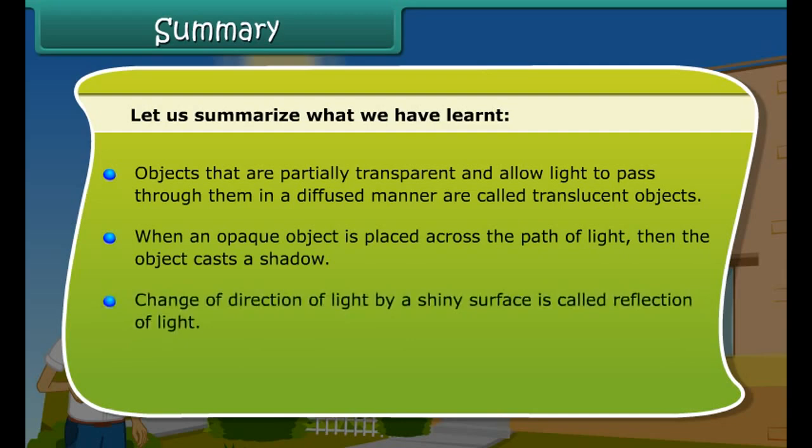Let us summarize what we have learned: Light is a form of energy that makes things visible. Light travels in a straight line. Objects that allow light to pass through them are called transparent objects. Objects that do not allow light to pass through them are called opaque objects. Objects that are partially transparent and allow light to pass through in a diffused manner are called translucent objects. When an opaque object is placed across the path of light, it casts a shadow. The change of direction of light by a shiny surface is called reflection of light.